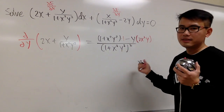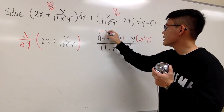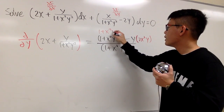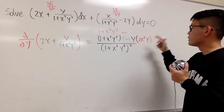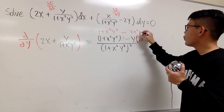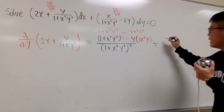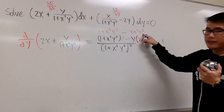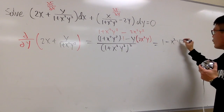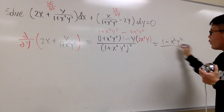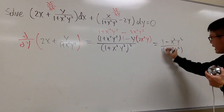On the top we can simplify. Multiplying by 1 gives (1 + x²y²), and then minus y times 2x²y gives minus 2x²y². So on the top we have 1 + x²y² minus 2x²y², and these like terms combine to give 1 minus x²y², over the denominator (1 + x²y²)².